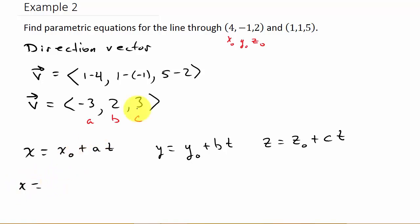So x equals x₀ which is 4 plus a which is -3 times t. So x = 4 - 3t.